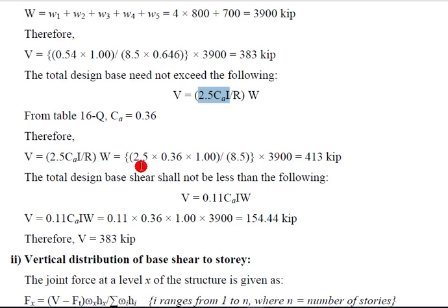Now V = 2.5 × CA × I / R × W. CA is 0.36, multiply I which is 1, divided by R 8.5, multiply by W 3900 kips. The value is 413 kips. So our V is less than this.